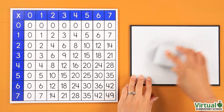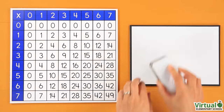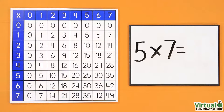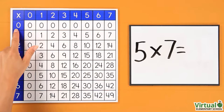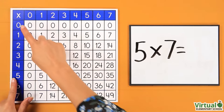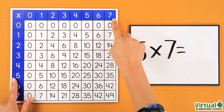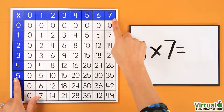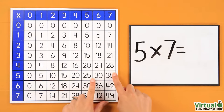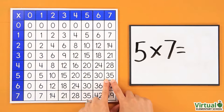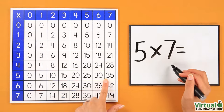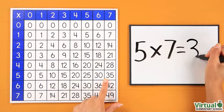Let's try another. What is 5 multiplied by 7? Find the number 5 in the first column. Find the number 7 in the first row. Move across the row and down the column until meeting at the answer, 35. This means that 5 multiplied by 7 equals 35.